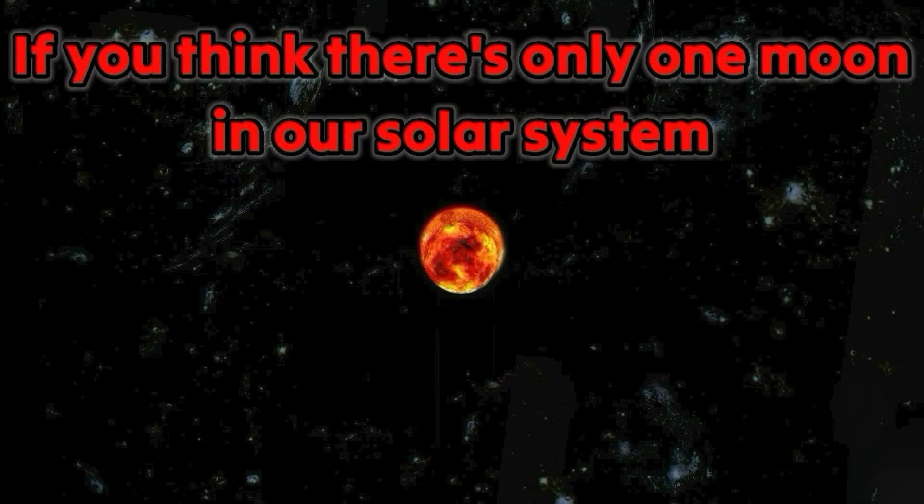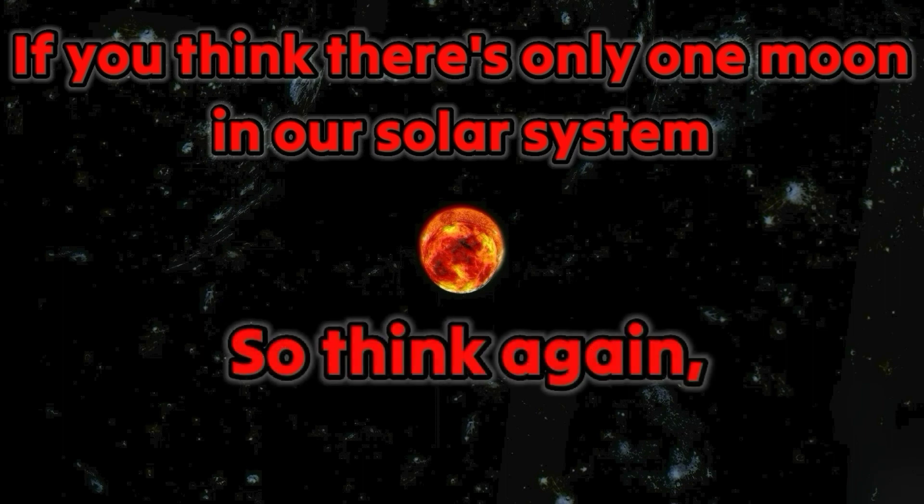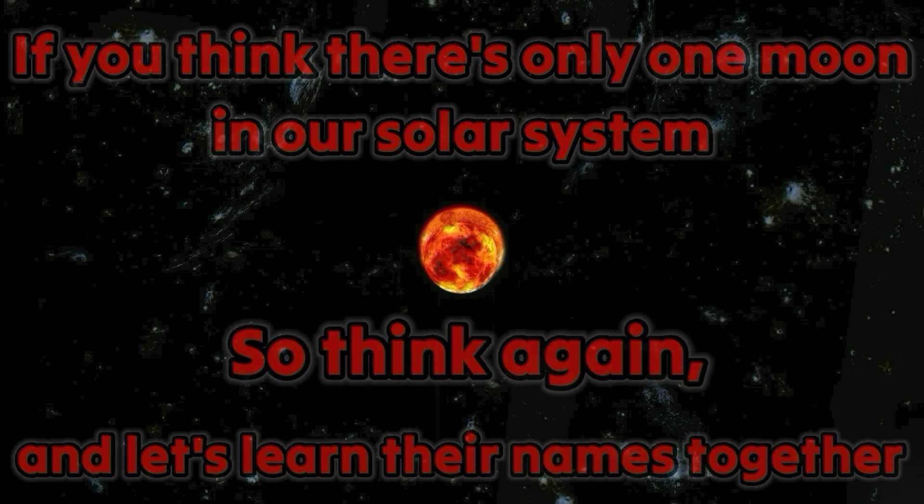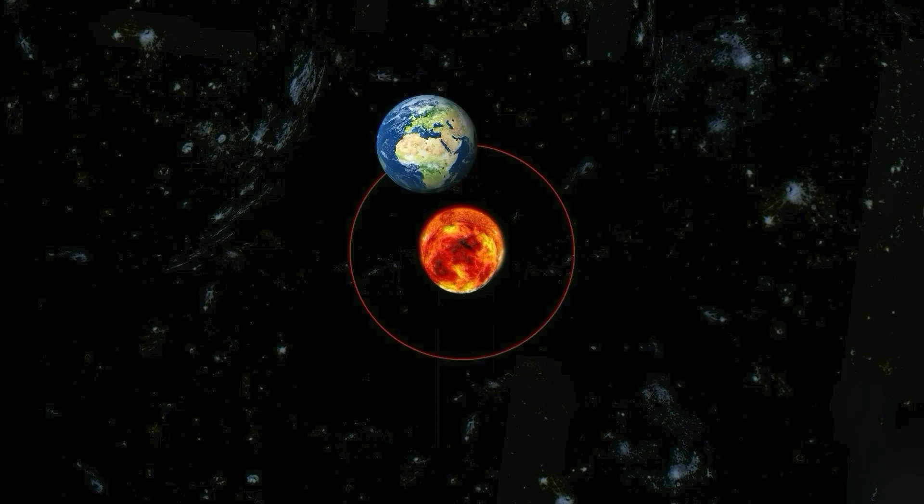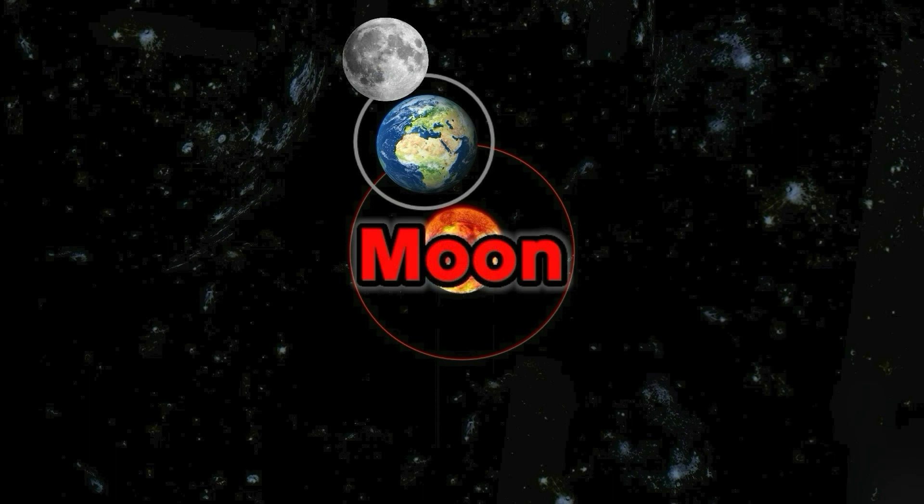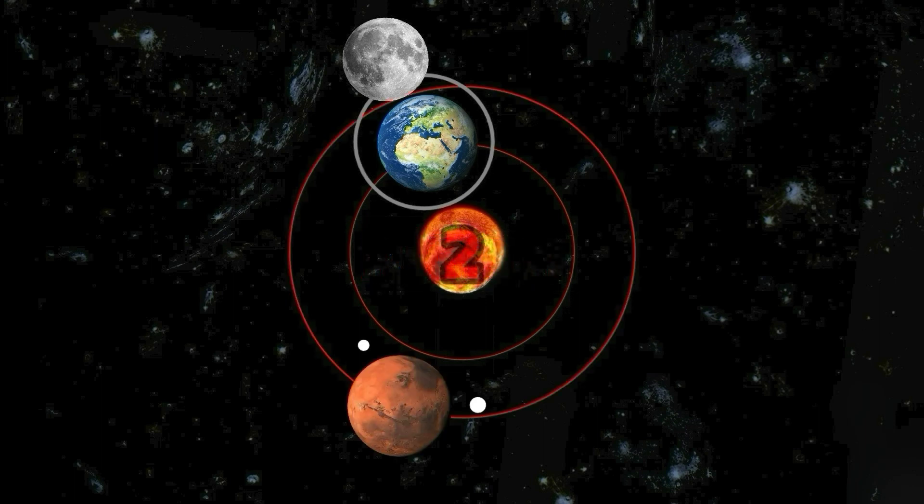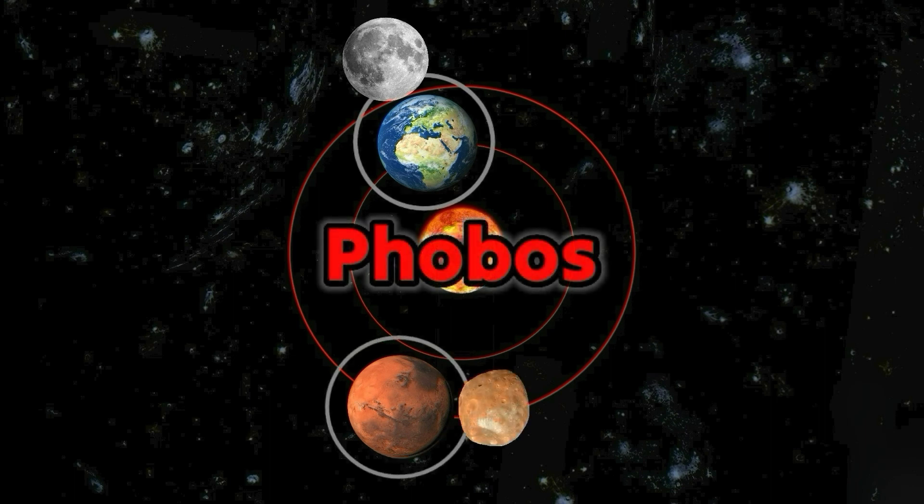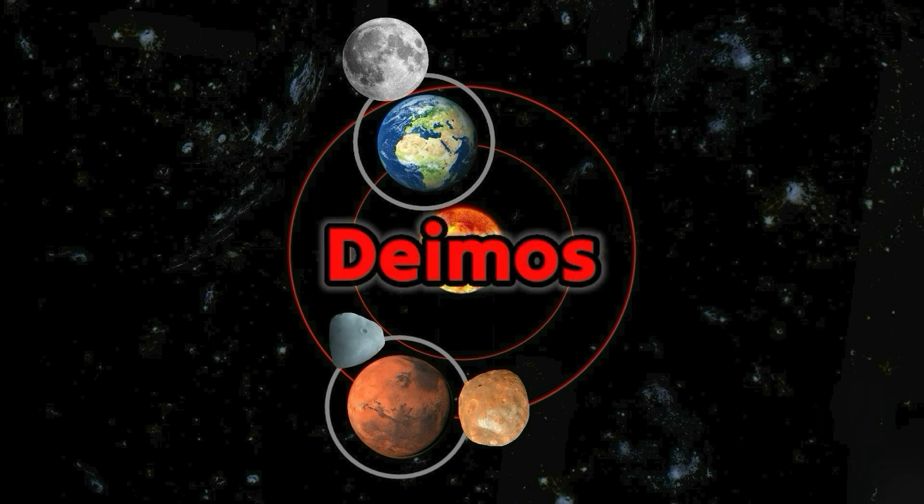If you think there's only one moon in our solar system, think again, and let's learn their names together. First we have the Earth's moon. Moon. Mars has two moons: Phobos and Deimos.